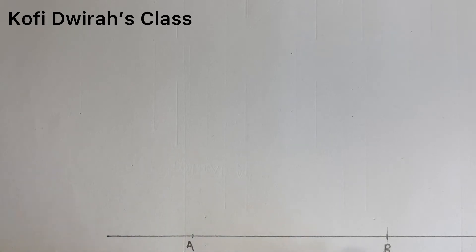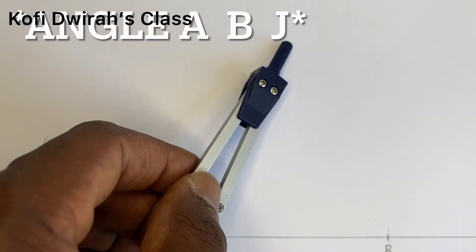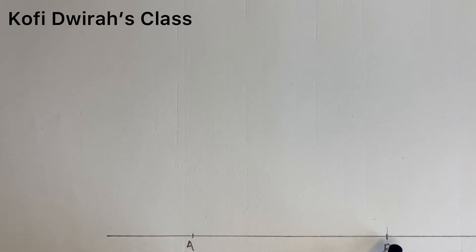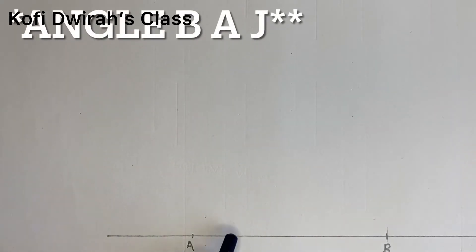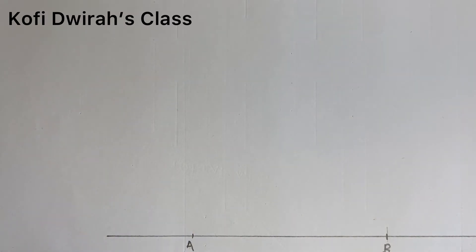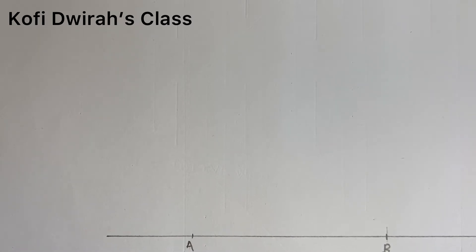We are going to get angle ABC to be 30 degrees and angle BAC to be 30 degrees. So now we are going to draw our angles here. To get the 30 degrees, we use the method of how to construct a 60 degree angle. Then after getting the 60 degrees, we bisect the angle to get our 30 degrees.